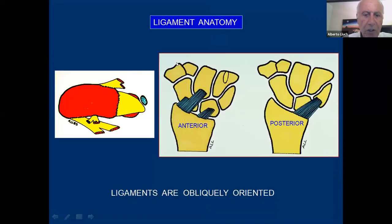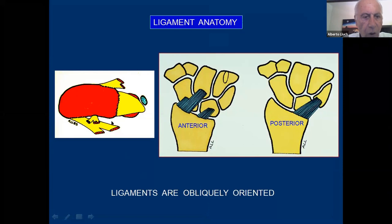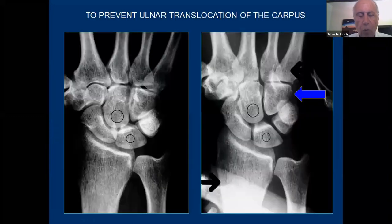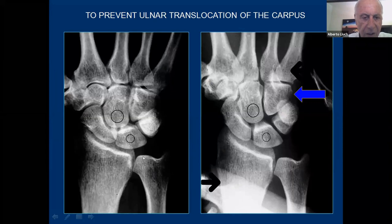Anteriorly, there's an anterior tilt of about 10 or 11 degrees of the distal radius, which makes the carpal condyle have a tendency to slide and fall towards the ulnar side because it will not be constrained on the ulnar side. For this reason, the ligaments are obliquely oriented. The ligaments are obliquely oriented from proximal to distal and from radial to ulnar. On the anterior side of the wrist we have the radioscaphoid, radiolunate, the radiocapitate, and the radiolunate. And in the posterior part of the wrist, we have the radiotriquetral ligament. The reason to have the ligaments in this way is to prevent the carpus from sliding and gliding towards the ulnar side.